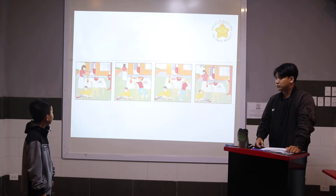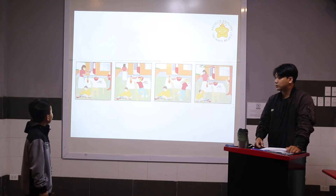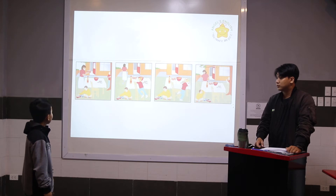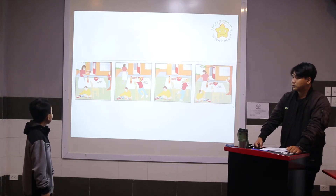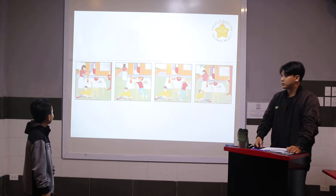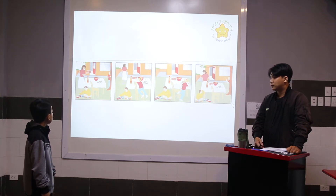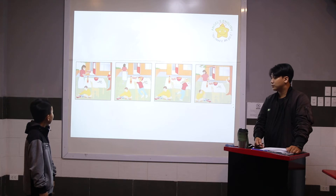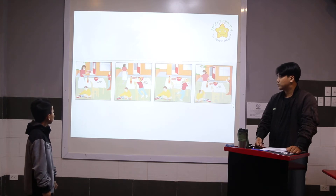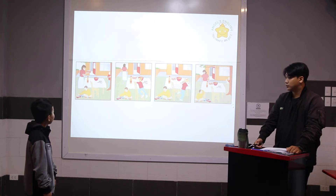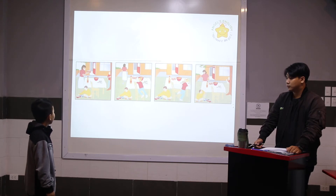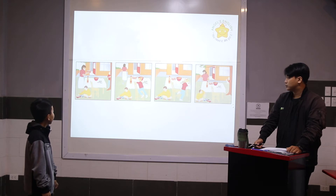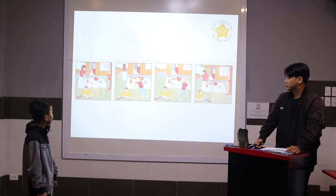Mrs. Brown is in the garden. She's putting a cake on the table. Jim is playing cards. His sister is watching him. His sister is climbing on the chair. She's looking at the cake.